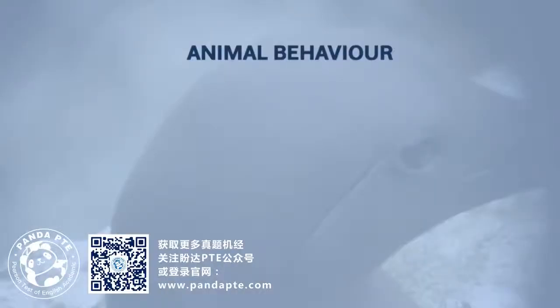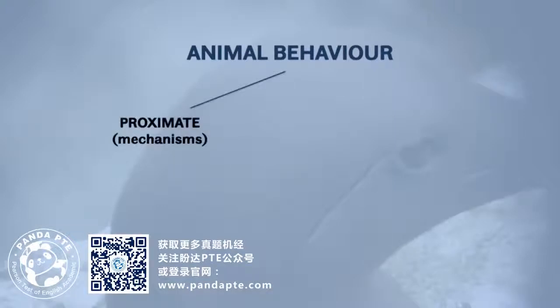We can ask two fundamental questions about animal behaviour. They're referred to as proximate and ultimate. Proximate questions are those concerned with the mechanisms that bring about behaviour. Ultimate questions are those concerned with the evolution of behaviour.